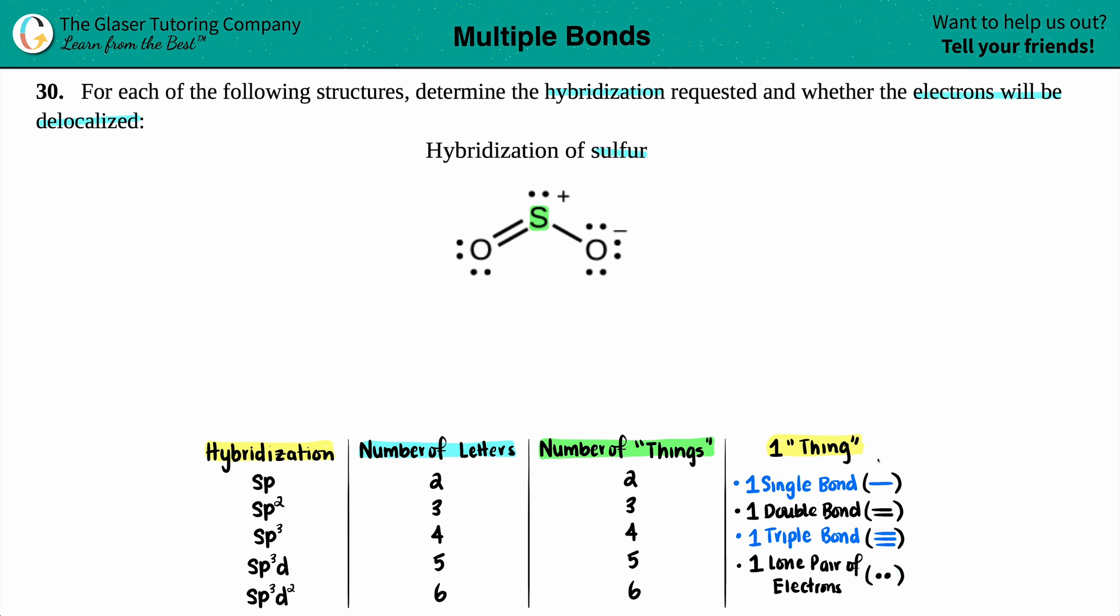Two letters, two things; three letters, three things. And just know what one thing is: it could either be one single bond, it could be one whole double bond—so even though there's two lines in a double bond, you'll group the double bond as one whole thing. Same thing goes for the triple bond: I see three lines but I group it together as one whole thing. And one lone electron pair, so two dots is grouped together as one thing.